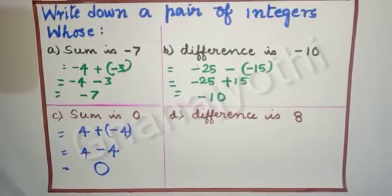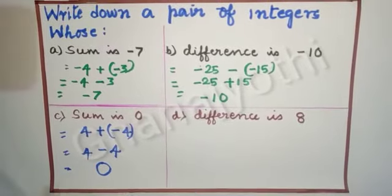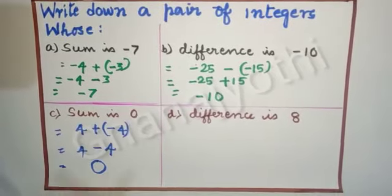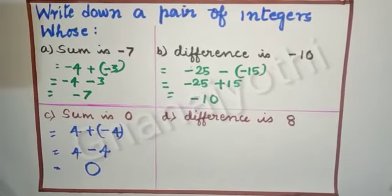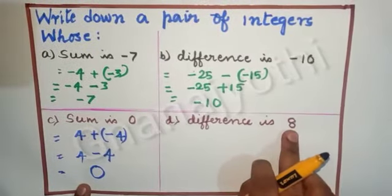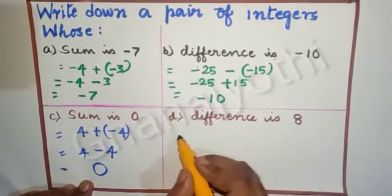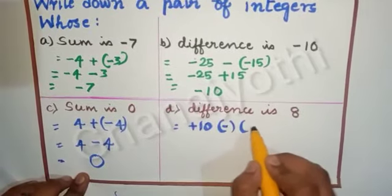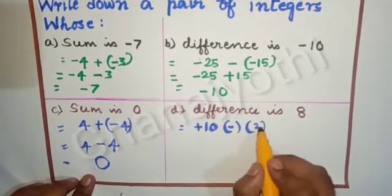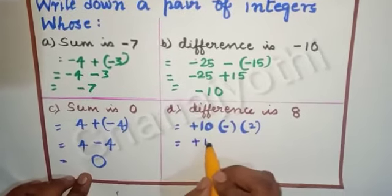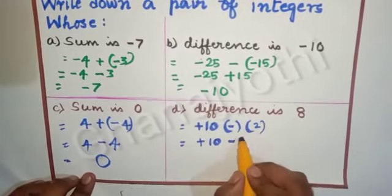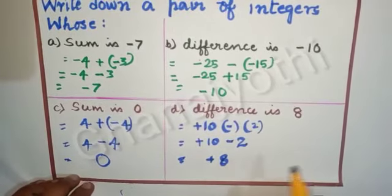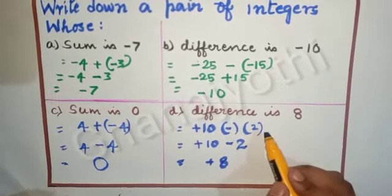Next, let us see the last one, the fourth one: the difference is 8. You can take: 9 minus 1 is 8, or 7 plus 1 is 8. But here we need to look at the difference only, which means the greater number should be the positive number, because it is plus 8. So let us take plus 10 minus plus 2, which means plus 2. It is equal to plus 10 minus into plus, which is minus, into 2. Now let us subtract: plus 10 minus 2, we get plus 8. Hence, the required integers are plus 10 and minus 2.